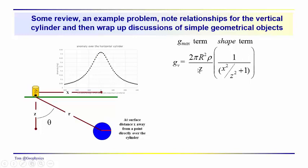We've got the term which describes the maximum value of the anomaly here, directly over a point on the surface directly over the center of the cylinder in this case. And then we also have a shape term which describes this symmetrical looking bell shaped curve, and that we were able to derive diagnostic positions, depth index multipliers, and so on.